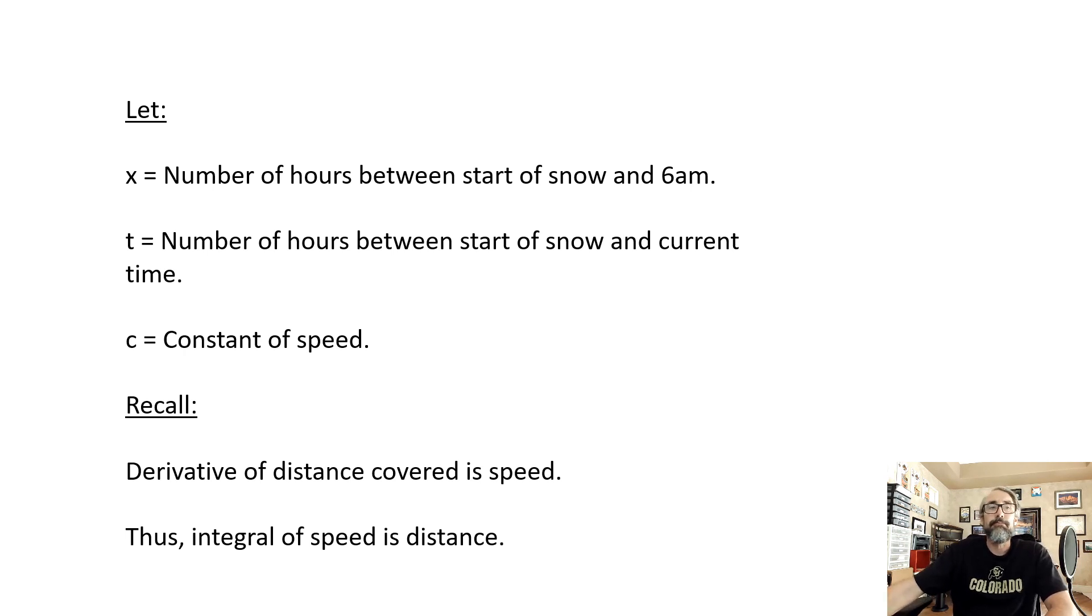Now, here's the Humdinger moment to this problem. Recall that if we have an equation of distance traveled by time, that if we take the derivative, we're going to get the speed at any given time. Therefore, the antiderivative of speed is going to be the distance covered. So let's try to set that up in an equation, shall we?